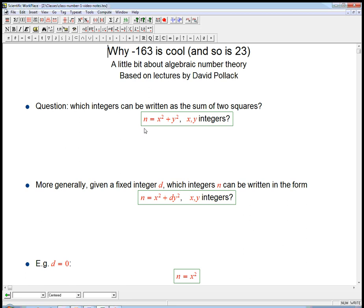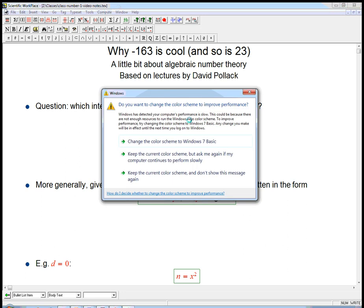He said a lot more than what I'm going to say. So here's the question. It's a very natural question. Which integers can be written as the sum of two squares? So I'm going to pick an integer n and ask, can it be written as x² + y², where x and y are also integers? Very classic number theory problem.